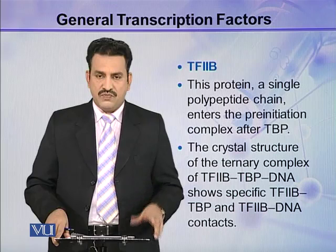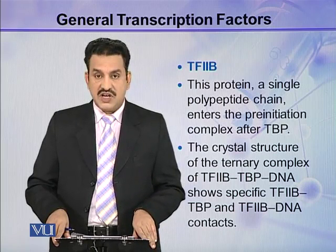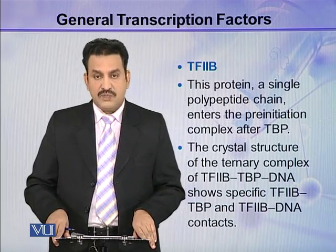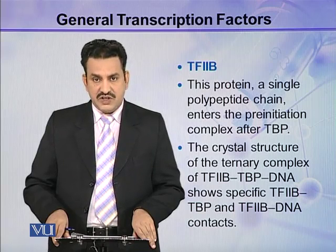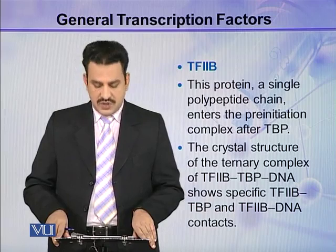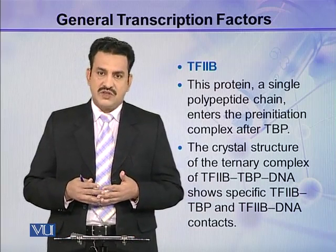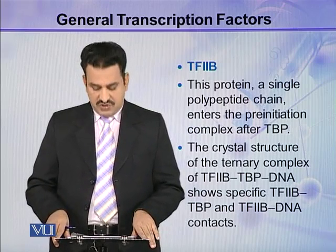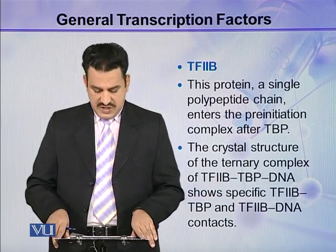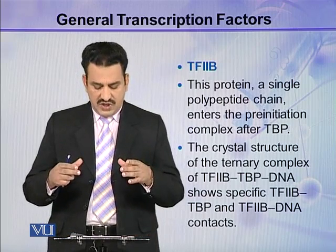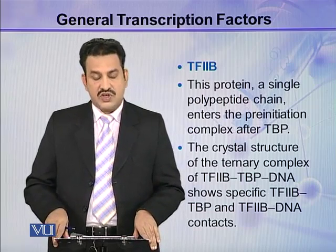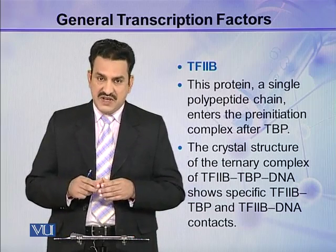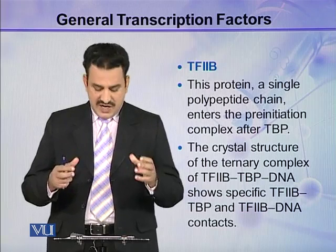The second type of transcription factor is TF2B, that is transcription factor 2B. This protein, which is a single polypeptide chain, enters the pre-initiation complex after TBP. The crystal structure of the ternary complex of TF2B, TBP, and DNA shows specific TF2B-TBP and TF2B-DNA contacts.